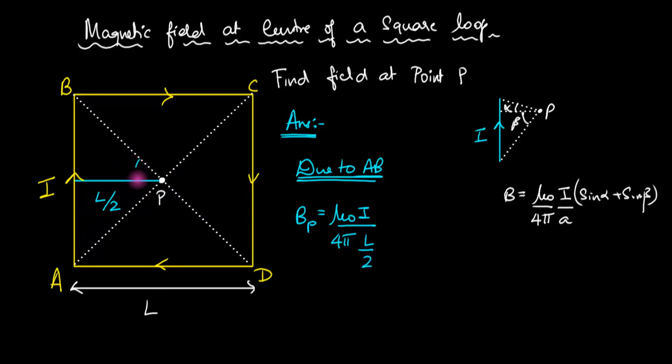sin alpha plus sin beta. For a square, these angles are 45 degrees each. So we get sin 45°, which is 1/√2, plus another sin 45°, another 1/√2.